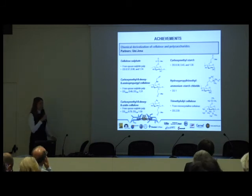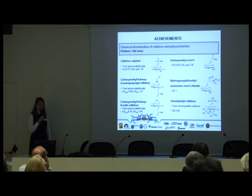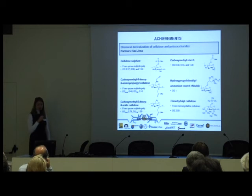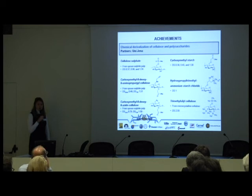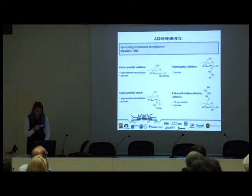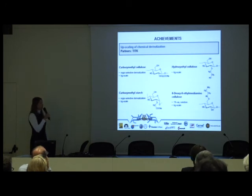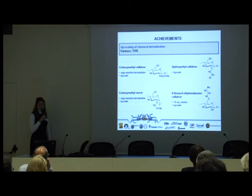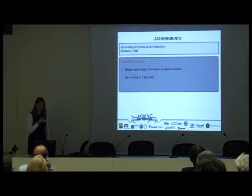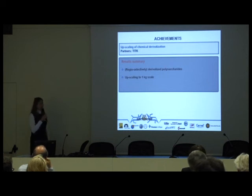Starting with the bottom-up approach and chemical derivatization, achievements were made at the University of Vienna towards different cellulose derivatives. At least six novel polysaccharide derivatives were produced with different substitution degrees based on different polymers such as pulp, starch, or cellulose. Coming to higher scale at the TITK partner, some cellulose derivatives were upscaled to kilogram scale, with some produced using a regular selective derivatization approach. Successful upscaling was achieved up to one kilogram scale.